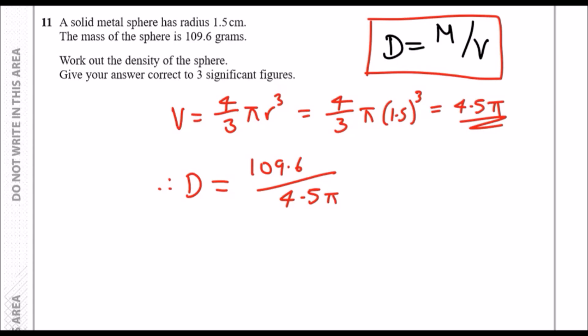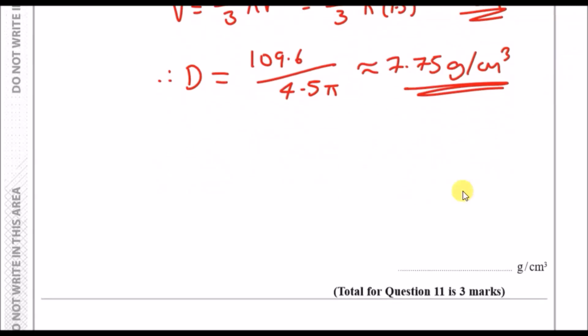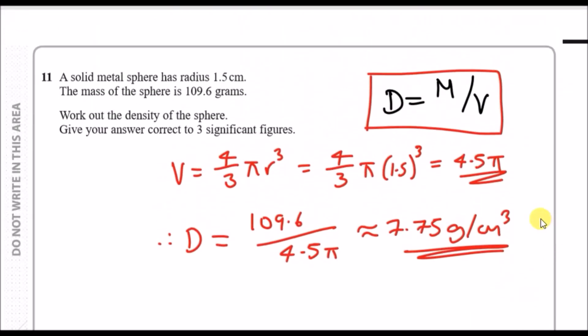Let's go ahead and do this as well just to make sure. So 109.6 divided by 4.5 pi, and we should get to three significant figures about 7.75 grams per centimetre cubed. It's important to state the units here — grams per centimetre cubed. And that's really it.